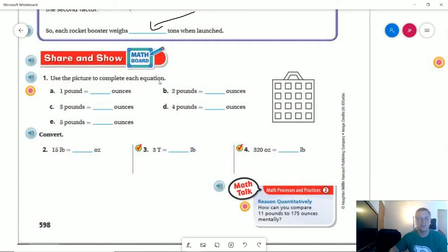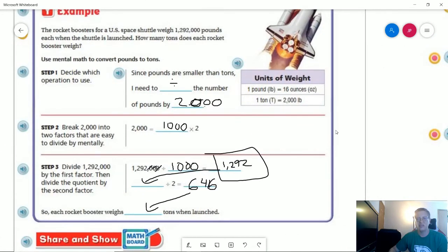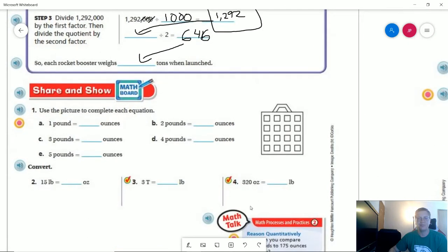Number one, use the picture to complete the equation. So one pound is going to be worth 16 ounces. And so three pounds would be worth 48. Five pounds would be worth 80. I think that's right. Yeah. I probably could have done it easier going this way. So two pounds would give me 32, and then the last one, I could double that and get 64.